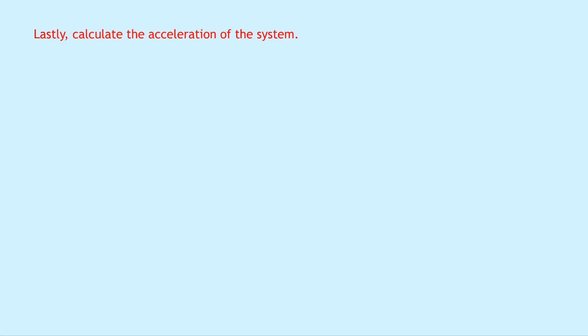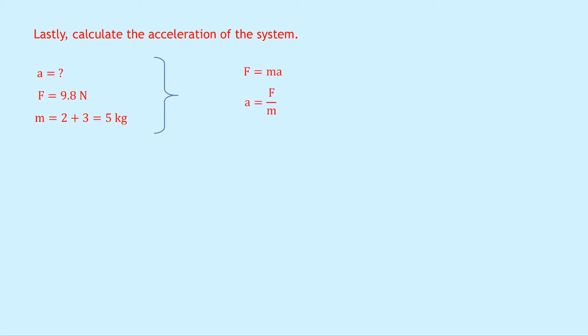Now that we have the unbalanced force, we work out the total mass of the system: two plus three equals five kilograms. Using Newton's second law, A equals F over M: 9.8 divided by five gives a final answer of 2.0 meters per second squared.